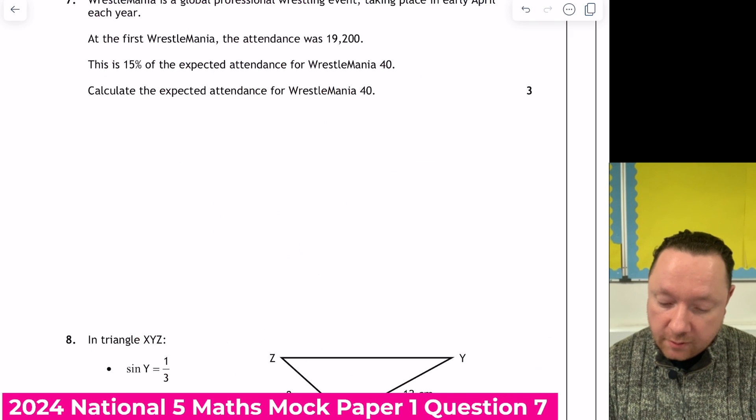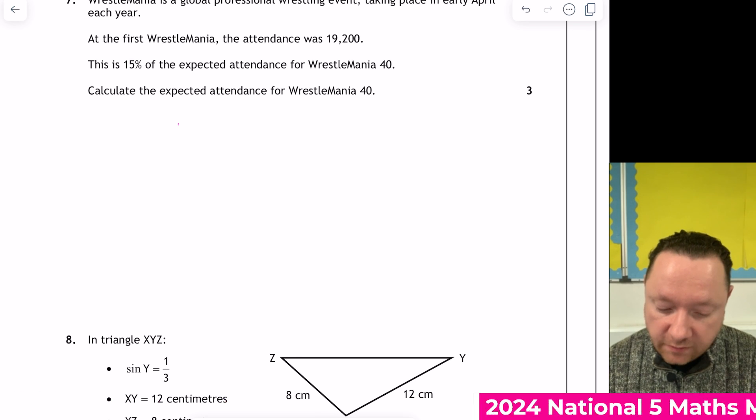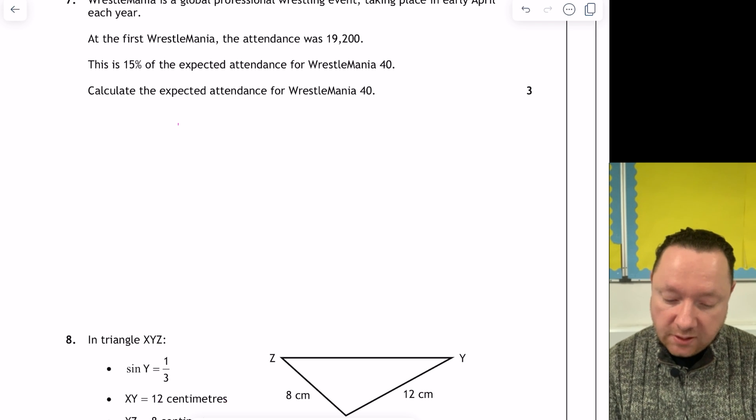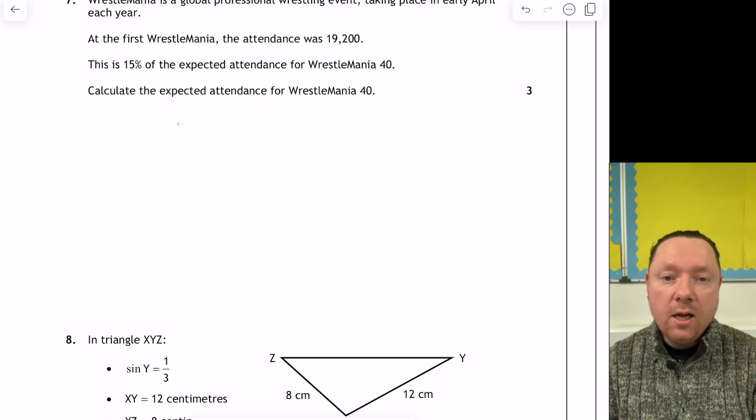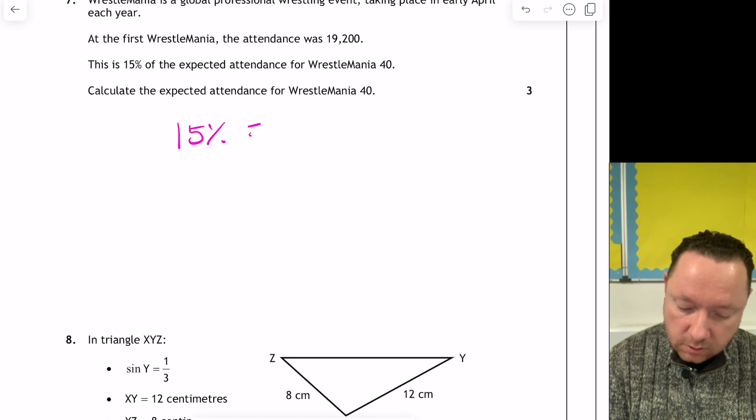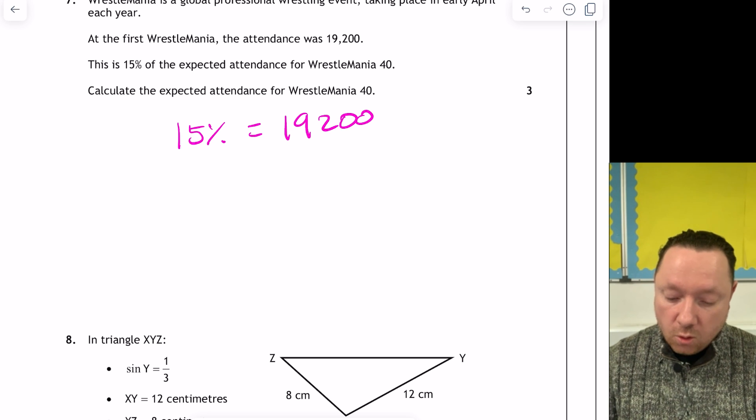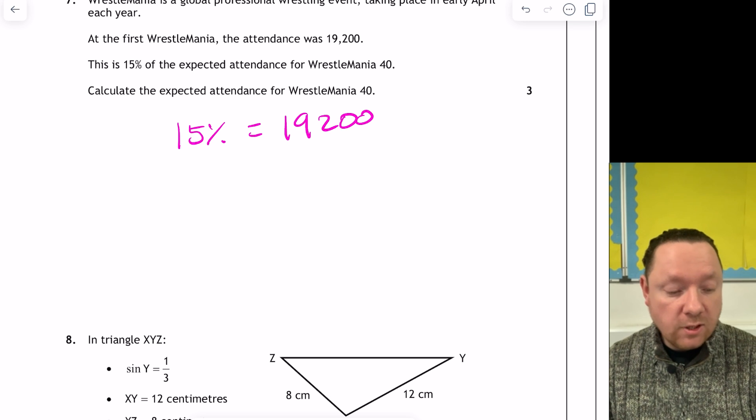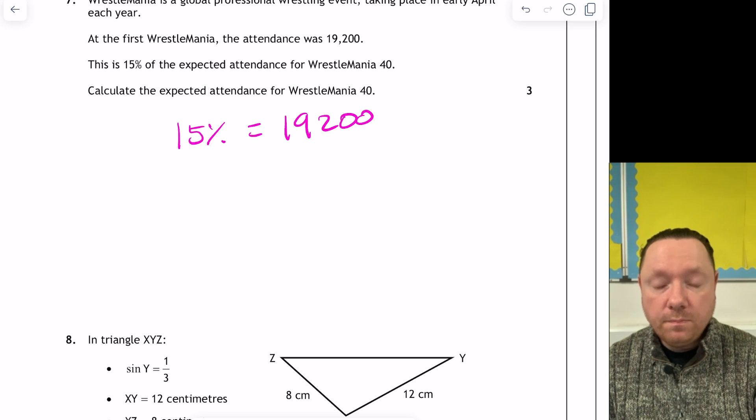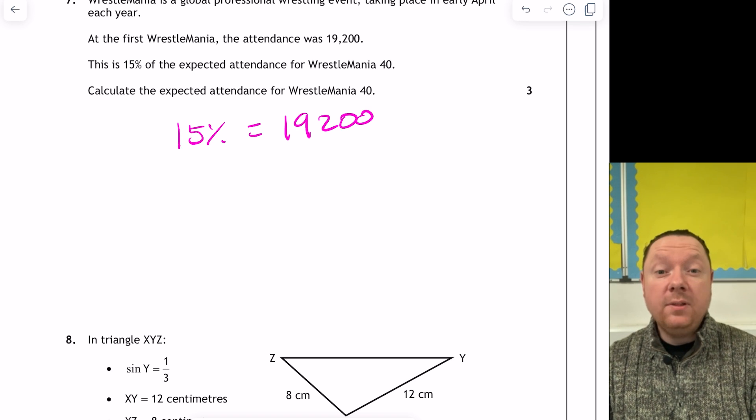Question 7. WrestleMania is a global wrestling event taking place in early April each year. At first WrestleMania attendance was 19,200. This is 15% of the expected attendance of WrestleMania 40. Calculate the expected attendance. So this is a percentage question, but there's no time, so it's not appreciation. So it's probably a reverse percentage. 15% equals 19,200. So now I need to get back up to 100% in some way. So we could probably try and divide by 15.